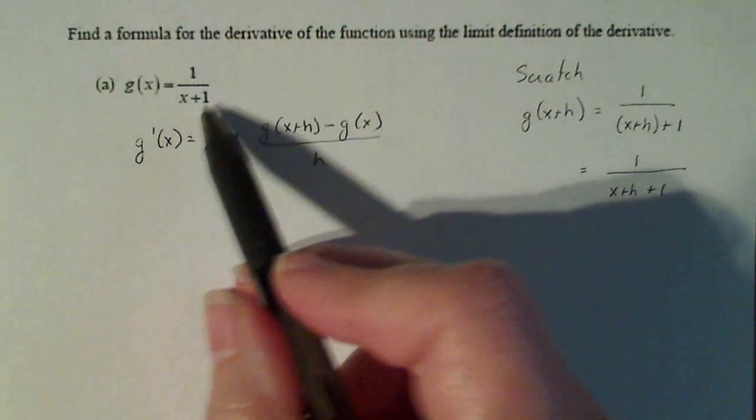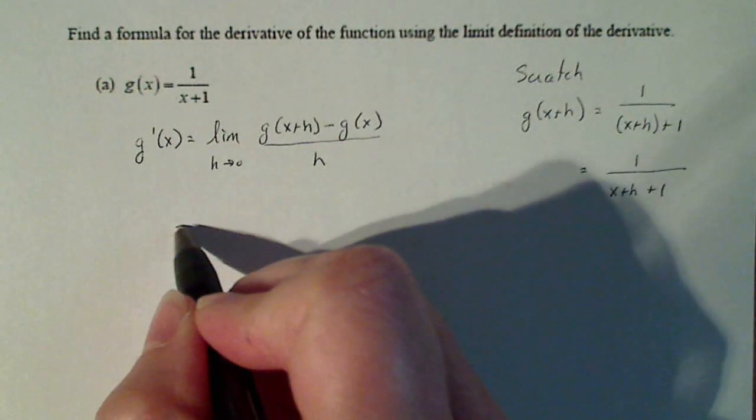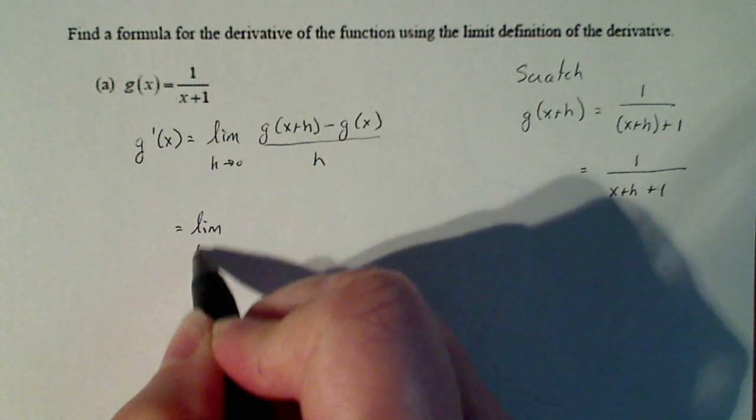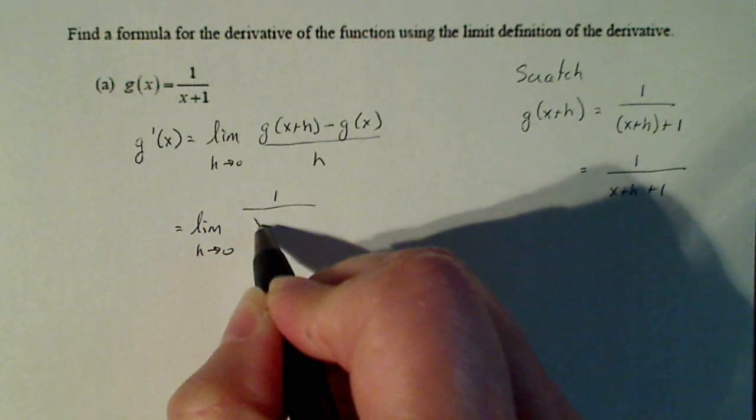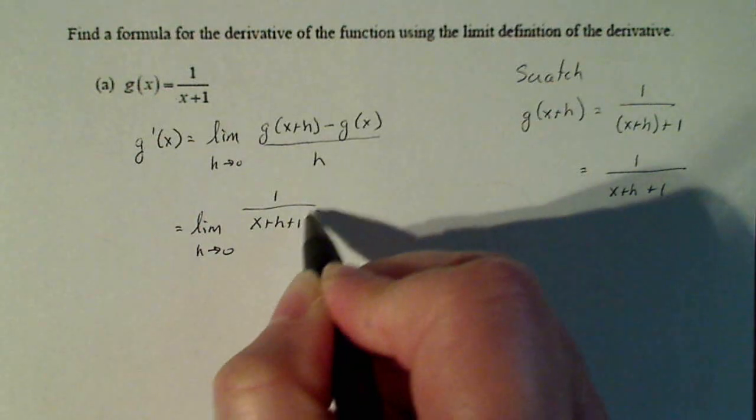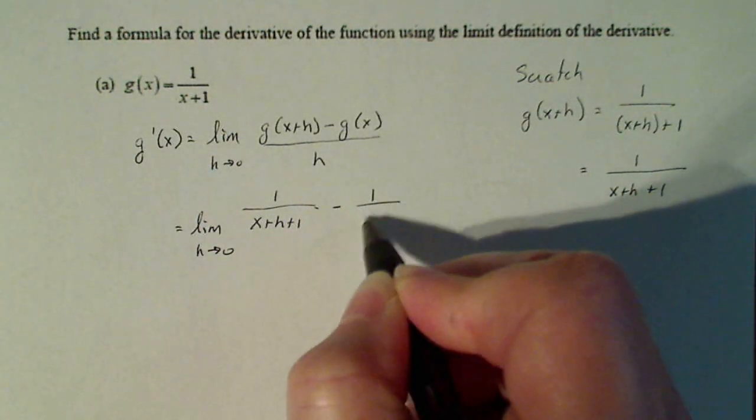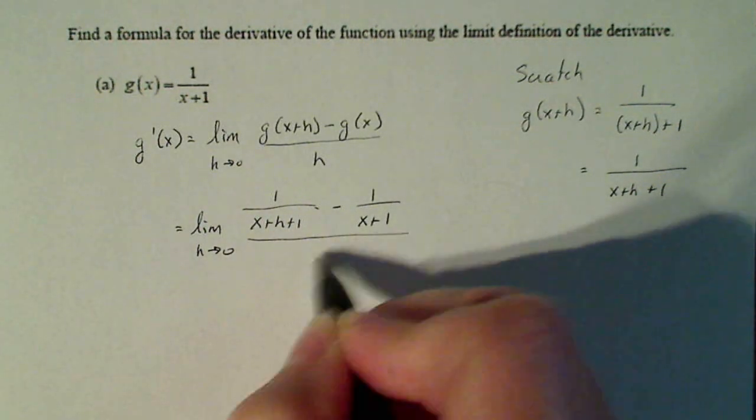g(x) is given to us as this function here, so let's substitute it all in. The limit as h goes to zero of [1/(x+h+1) - 1/(x+1)]/h.